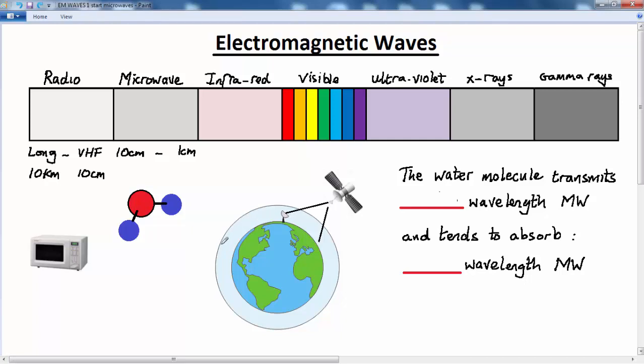Now the water vapor or water molecule present in the earth's atmosphere is able to transmit some of the microwave frequencies but absorbs others. And it turns out that the water molecule transmits shorter wavelength microwave, that's the higher frequency,